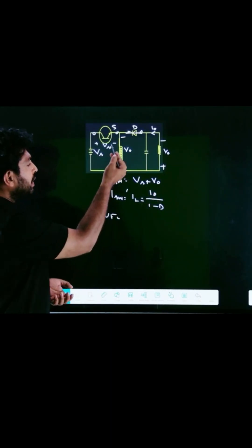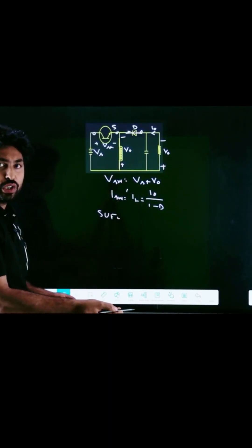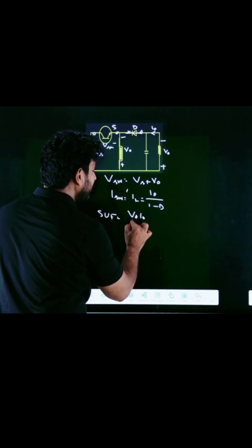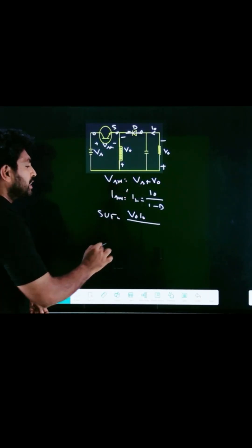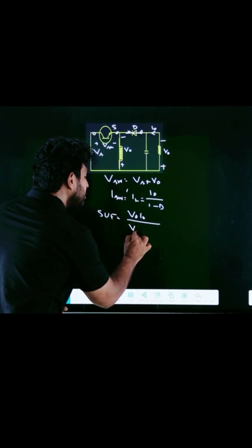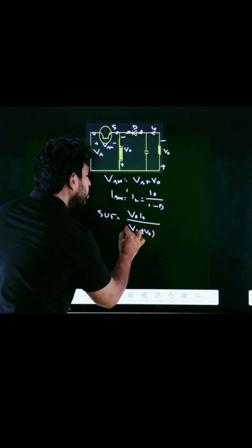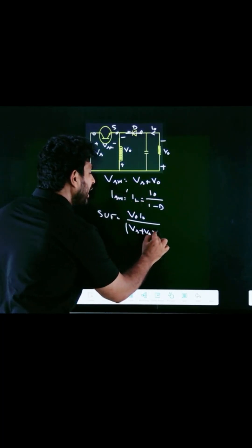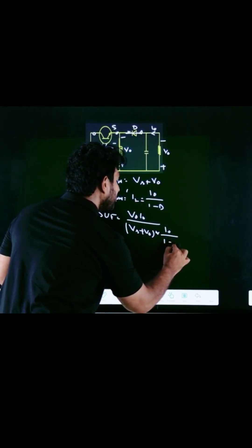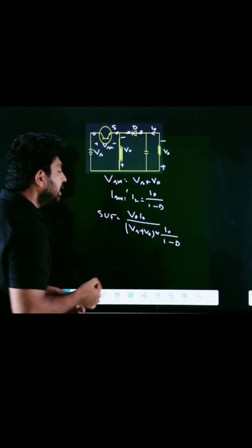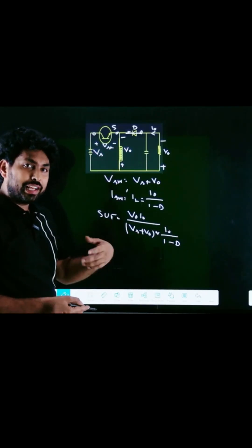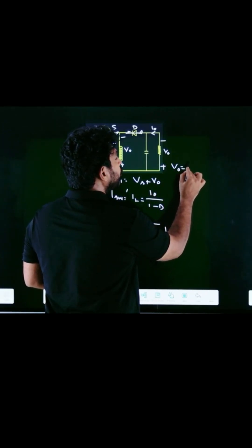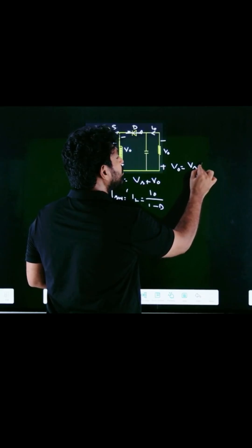We can now find the switch utilization factor. It is V0 times I0 (output power) divided by the switching stress: voltage across the switch (VS plus V0) times the current through the switch (I0 divided by 1 minus D). In continuous conduction mode for the buck-boost converter, V0 equals VS times D divided by (1 minus D).